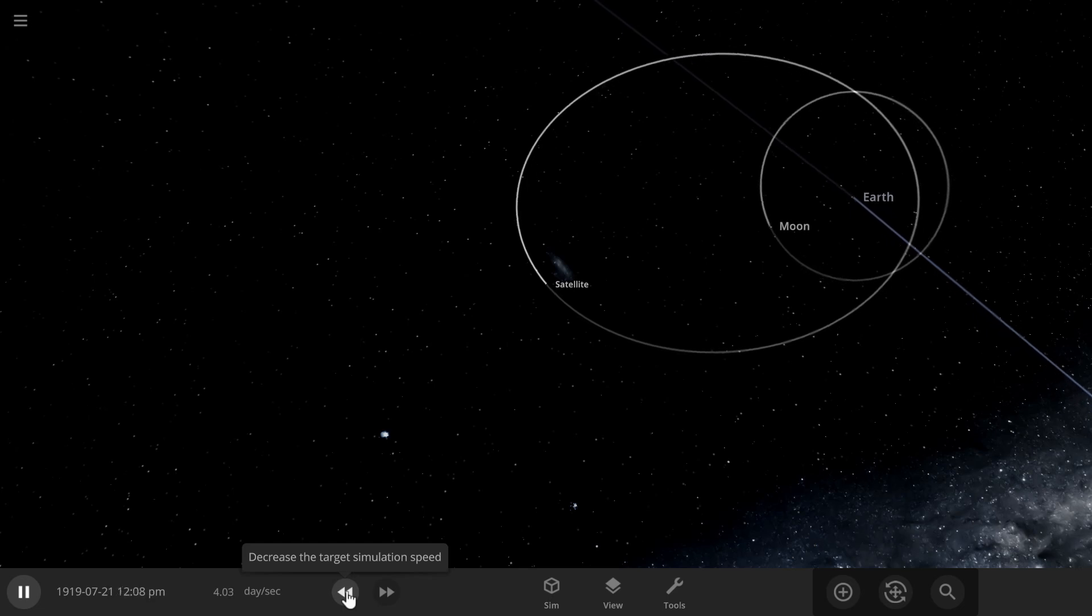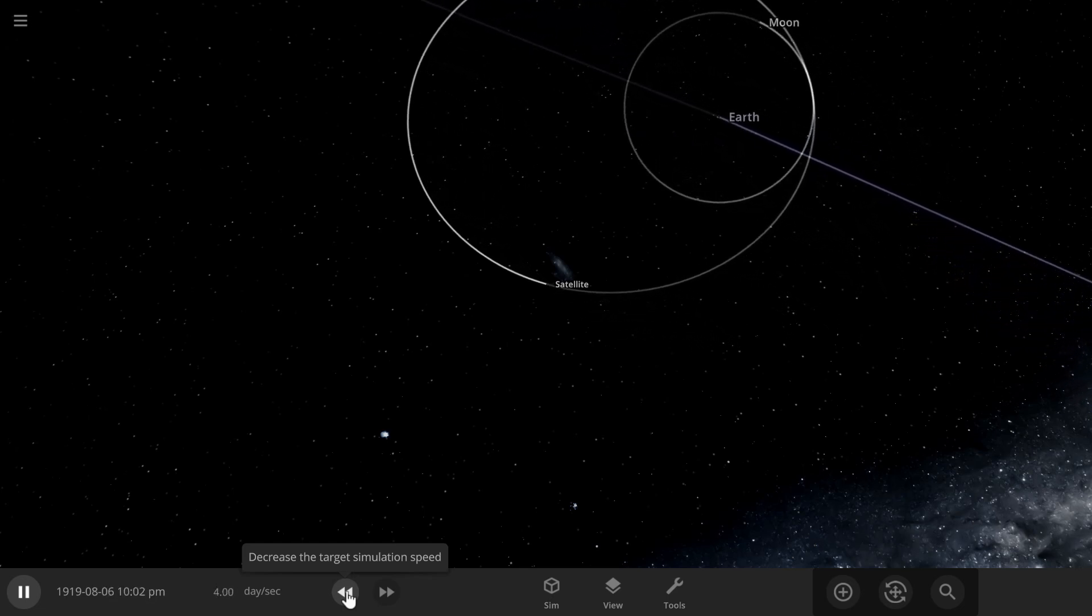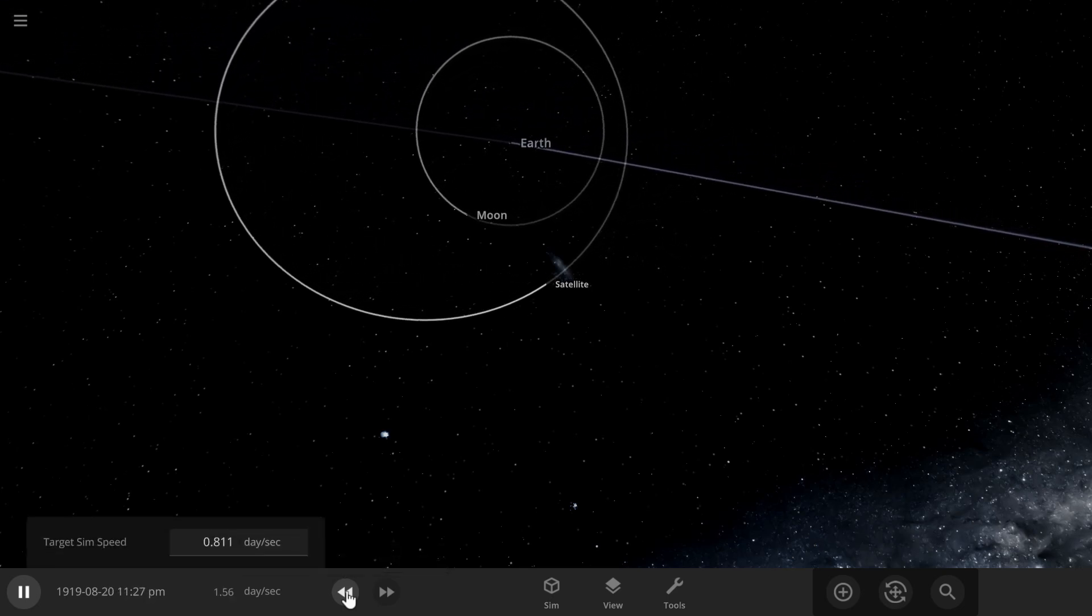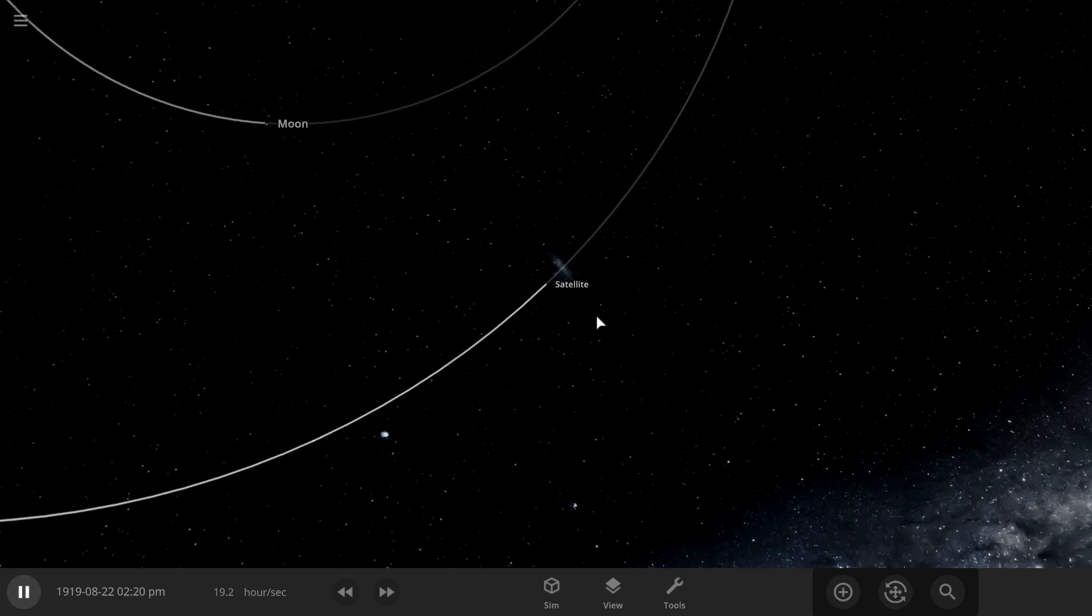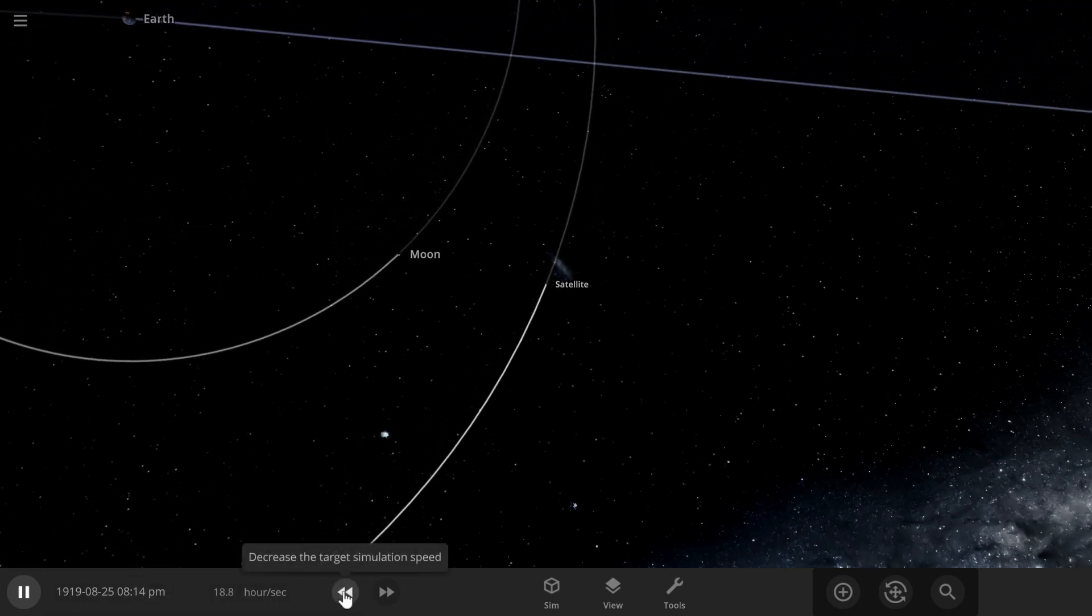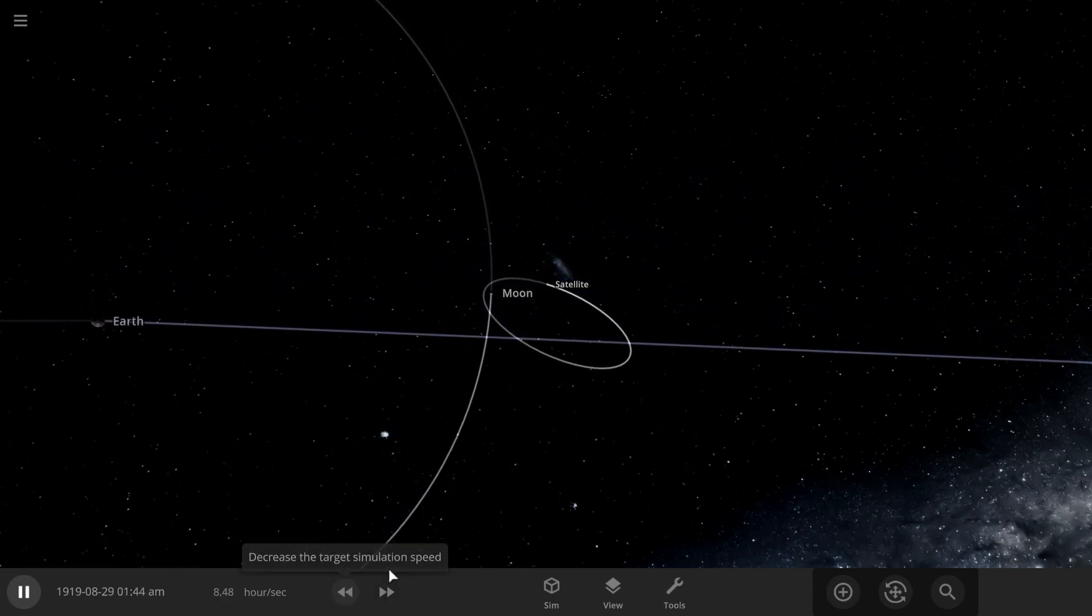You can, if you had a perfect trajectory, come down and encounter the moon and get into a loosely bound orbit without spending any delta V. Although, in practice, you're going to have to spend a bit of time, spend a little bit of fuel trimming your orbit, making sure that you're exactly on course and correcting any errors in the trajectory that you've actually built up.